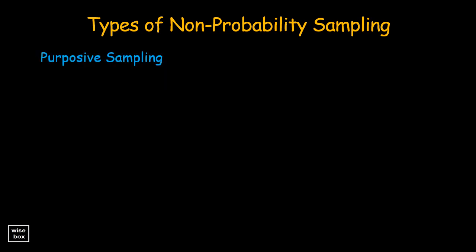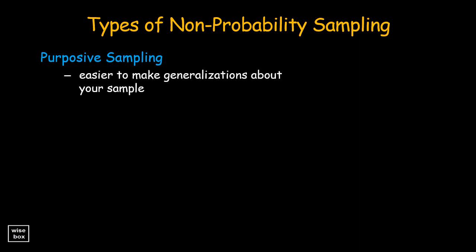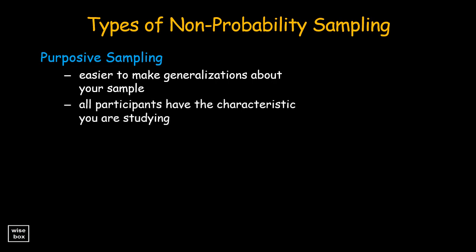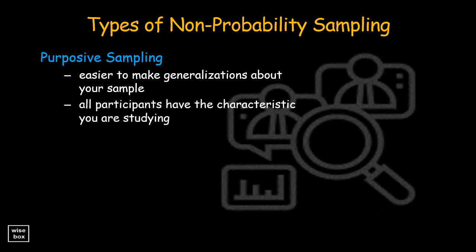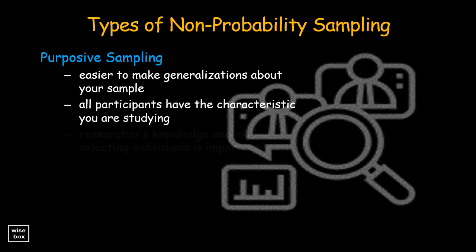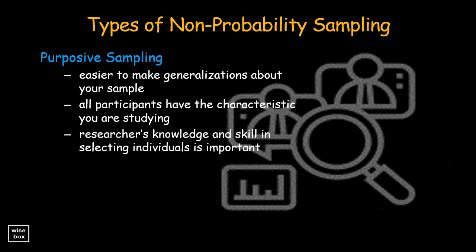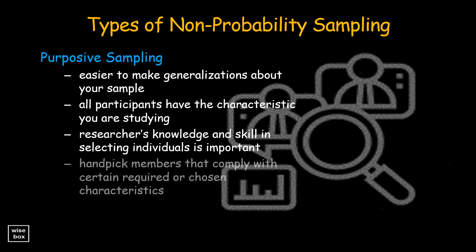In general, one major advantage of purposive sampling is that it's easier to make generalizations about your sample, since all participants have the characteristic you are studying. The researcher's knowledge and skill in selecting individuals is primarily important in this sampling process, since it is a tedious task to carefully handpick members that comply with certain required or chosen characteristics.